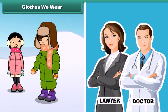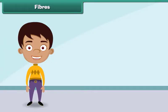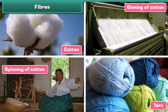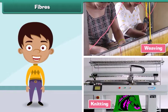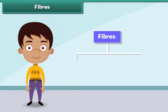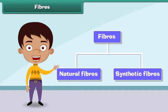Fibers are the raw material used in manufacturing clothes. Fibers are transformed into clothes through a series of steps. First, raw fibers are twisted together to form long strands of threads known as yarns. The yarns are then woven and knitted to form fabrics. Finally, fabrics are used to make clothes of different sizes and shapes to suit the needs of the people. Fibers are of two types: natural fibers and synthetic fibers.